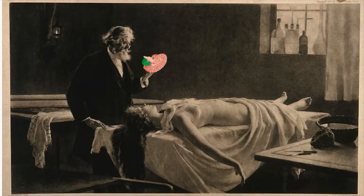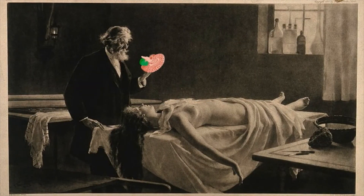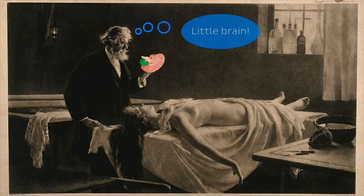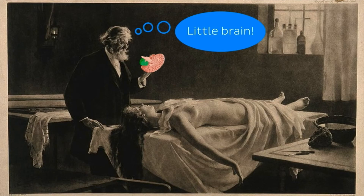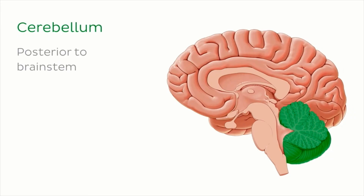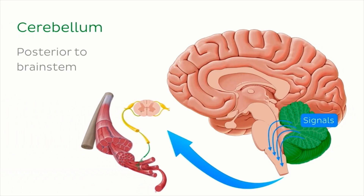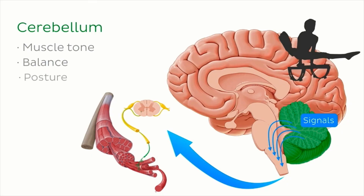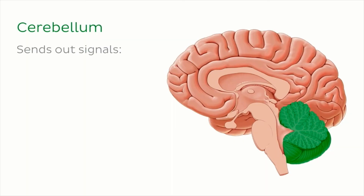Next up we have the cerebellum. An anatomist studied this small ovoid mass of grey and white matter and thought it sort of looks like a little brain — and thus the cerebellum got its name. You can find the cerebellum hiding behind, or posterior to, the brainstem. The cerebellum helps maintain muscle tone, balance, and posture by sending out involuntary signals to your peripheral nervous system.